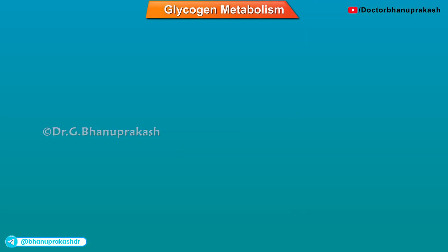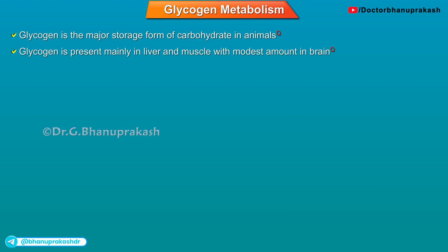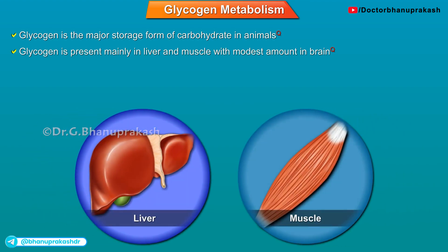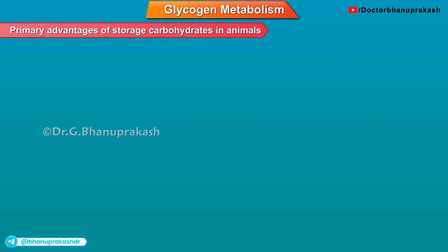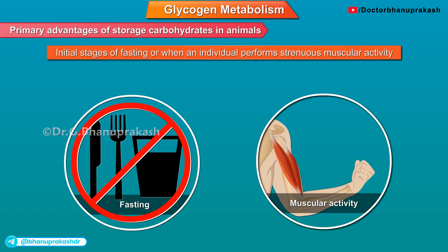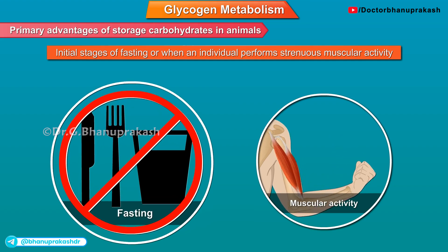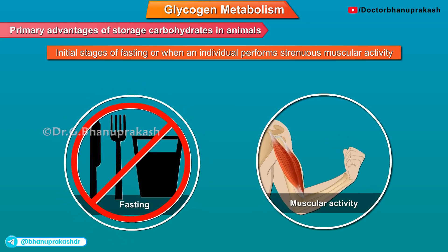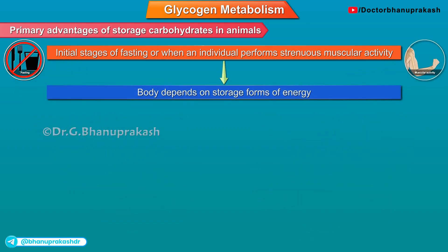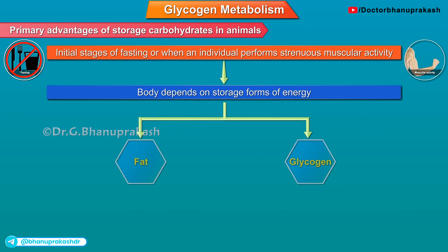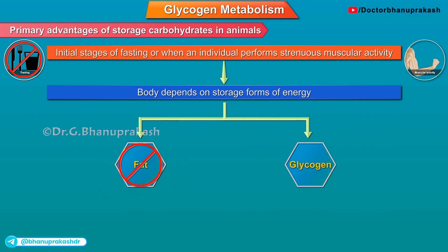Glycogen is the major storage form of carbohydrate in animals, present mainly in the liver and muscle with modest amounts in the brain. The primary advantage of storing carbohydrates in animals is that when we require energy on an immediate basis — for example, during initial stages of fasting or when an individual performs strenuous muscular activity — we depend on the storage form of energy in the body, and such energy cannot be released from fat.